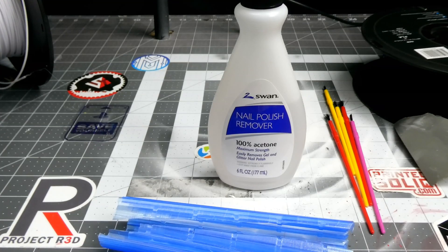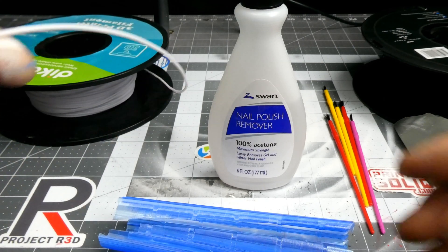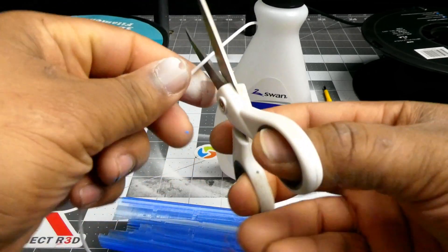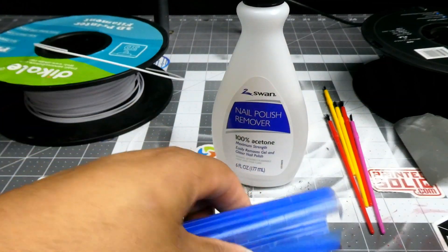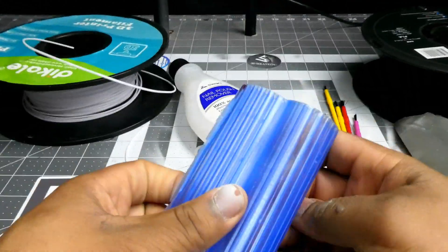So to make the slurry, I usually use remnants of a roll that aren't enough to finish really too many prints. And I use scraps from previous prints as you'll see here. And like I said, this, the Swan nail polish remover, make sure you get 100% acetone.